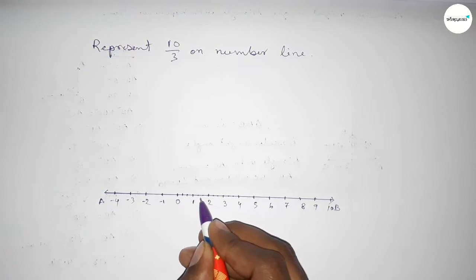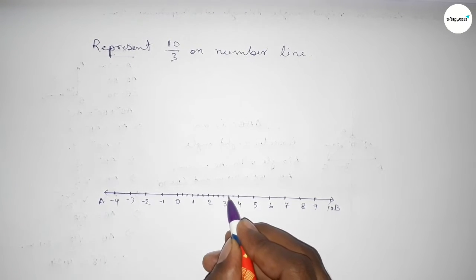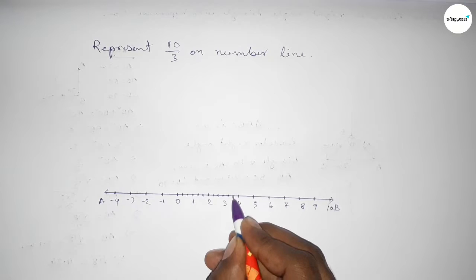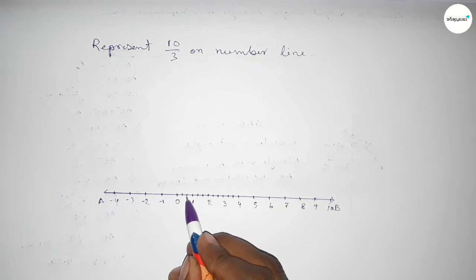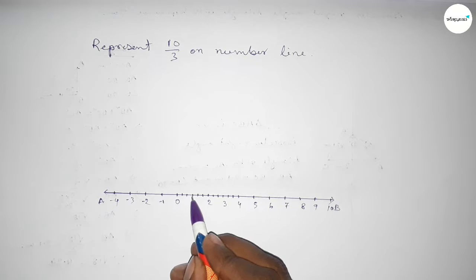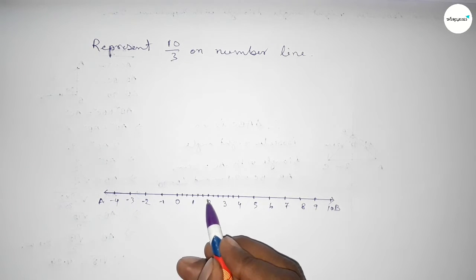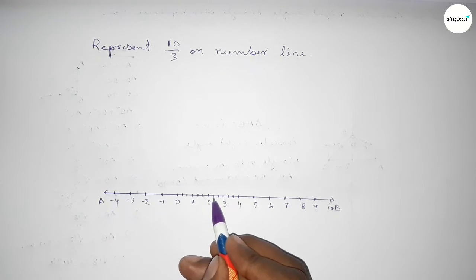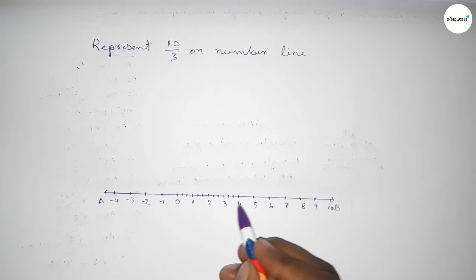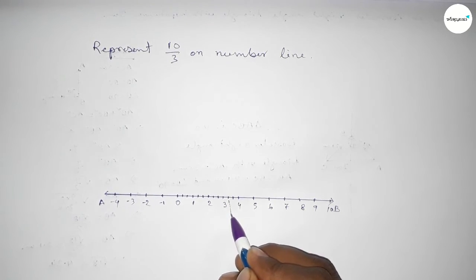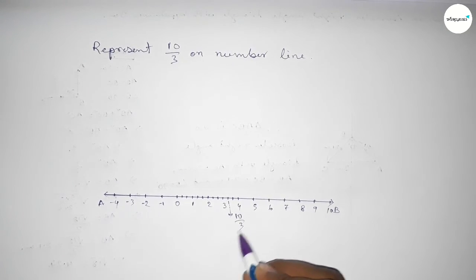Now mark the fractions with deep color to understand perfectly. These points are: 1 over 3, 2 over 3, 3 over 3, 4 over 3, 5 over 3, 6 over 3, 7 over 3, 8 over 3, 9 over 3, and 10 over 3. So this is 10 over 3 on the number line.